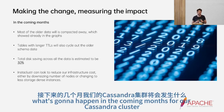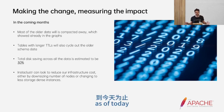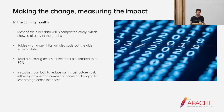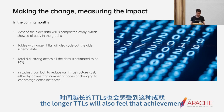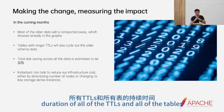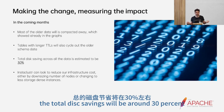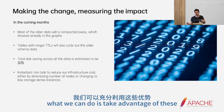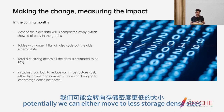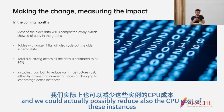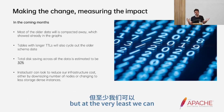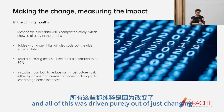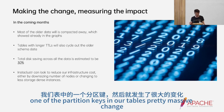As of today most of the older data has been compacted away, and we're already seeing the major benefits in our Cassandra cluster. Over a longer period of time, the longer TTLs will also deliver that benefit. We estimate that over the duration of all the TTLs and all the tables, the total disk savings will be around 30% — and remember, that's 30% across 70 nodes. In the future we can take advantage of these savings to downsize the cluster, move to less storage-dense instance sizes, and possibly reduce the CPU cost of these instances as well. All of this was driven purely out of changing one partitioning key in our tables.